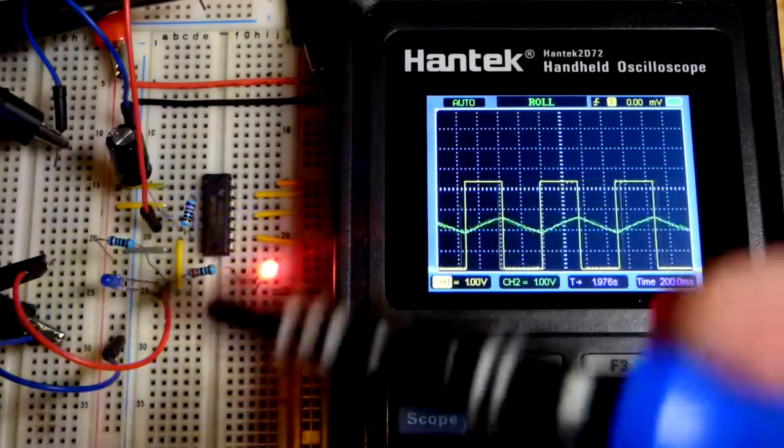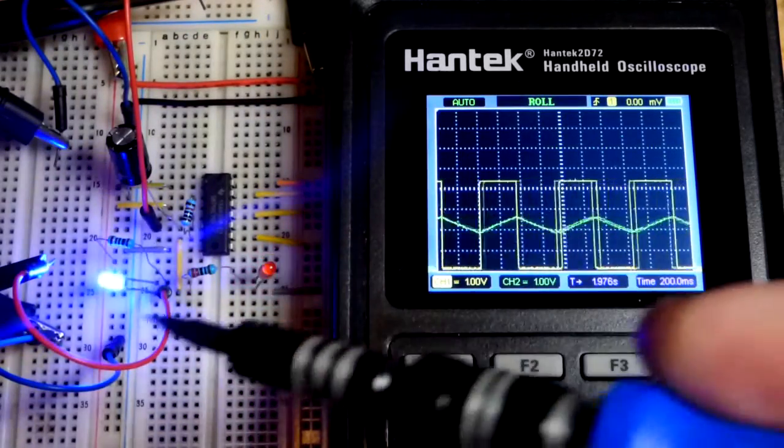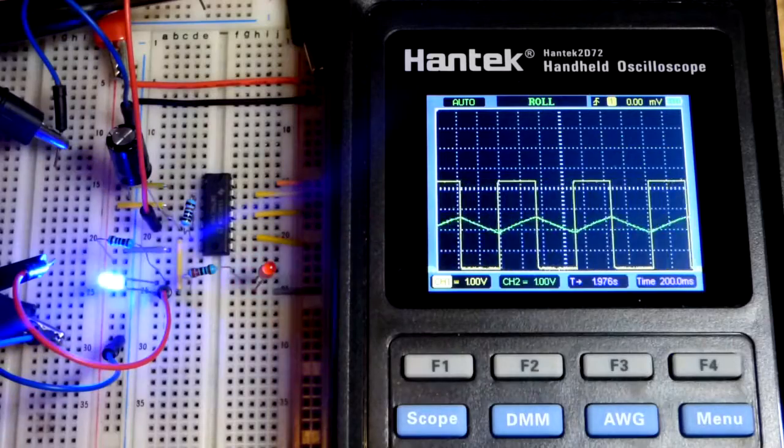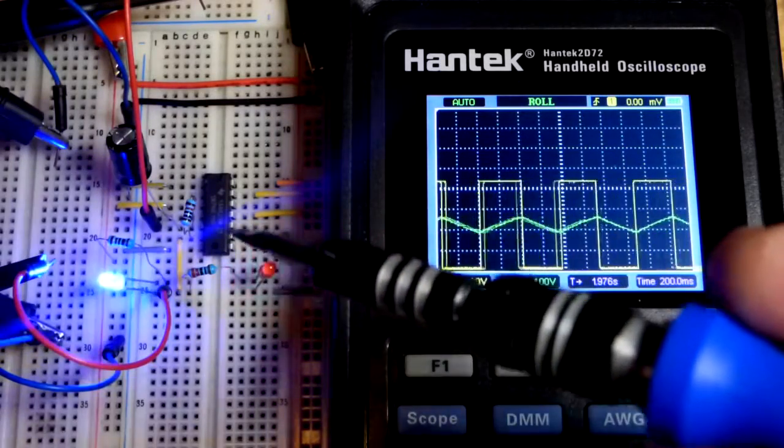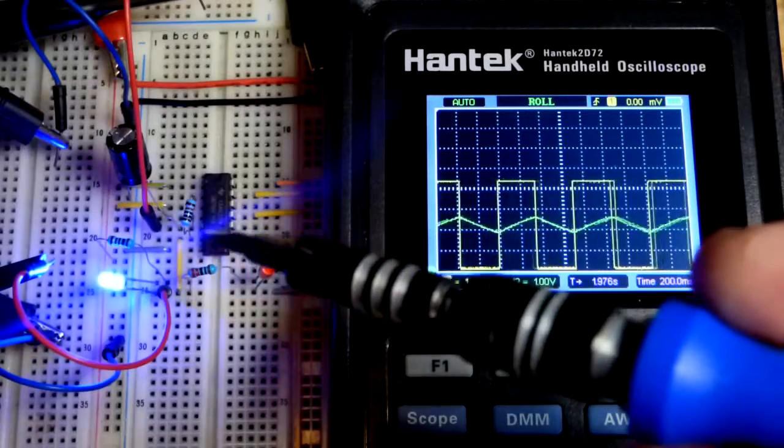So now in this video we're going to look at this circuit here. As you can see, we got LEDs that are alternating, they're flashing. That's because we made an astable timing circuit where the output just keeps going high and low as long as we have power provided.